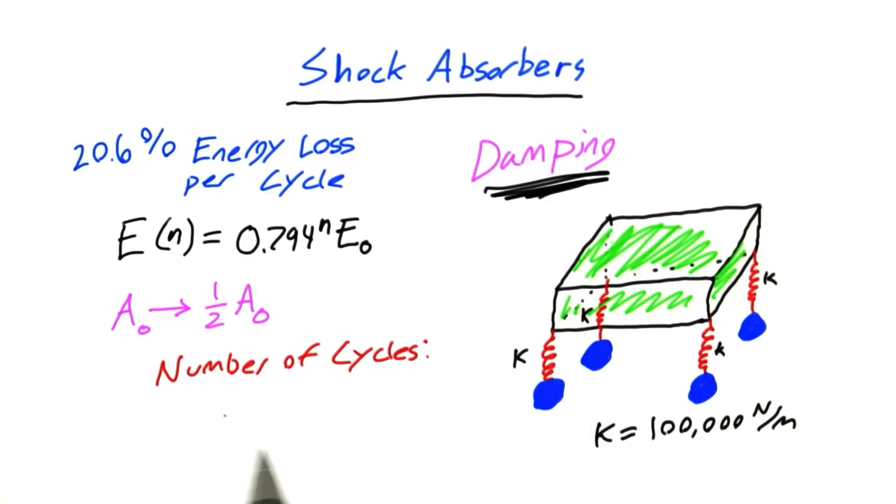Put your answer here and round your answer to the nearest whole cycle. Don't say 3.5, say 4, for example.